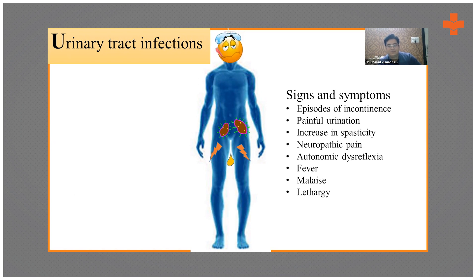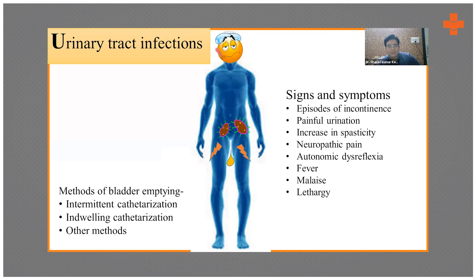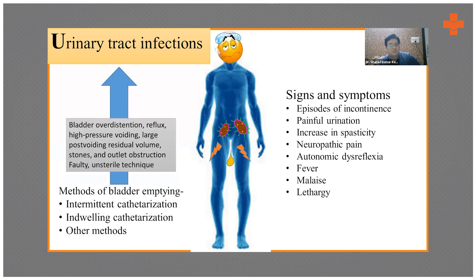Methods of bladder emptying include intermittent catheterization, indwelling catheterization, or a long-term Foley catheter. Even better is a suprapubic cystostomy, especially if there is no other option and the patient is quadriplegic with a caregiver who is not willing. A Foley catheter is suitable for up to 21 days; if prolonged catheterization is required or home-based rehabilitation is planned, send the patient with a suprapubic cystostomy.